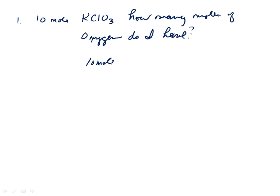If I have 10 moles of potassium chlorate, how many moles of oxygen do I have? For some reason this throws a lot of students, but think about what the answer is. If you have 10 moles of potassium chlorate, for every one mole of potassium chlorate you have three moles of oxygen, three moles of O.